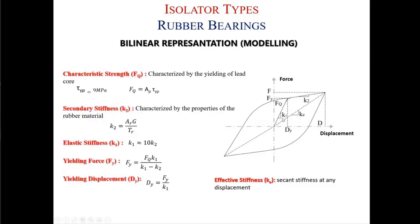The initial stiffness K1 depends on the secondary stiffness and the properties of the lead plug inside. The secondary stiffness depends only on the rubber compound — if you change the size of your isolator or the shear modulus of the rubber compound, you change the secondary stiffness. The initial stiffness can be calculated approximately as 9 to 11 times the secondary stiffness — typically 10 times. If you know the yield force and yield displacement, you can easily model the bearing.